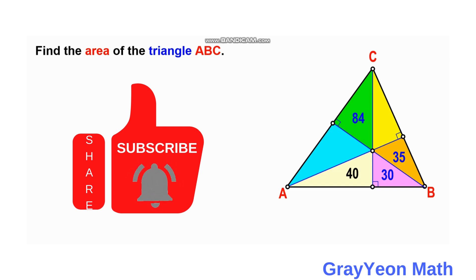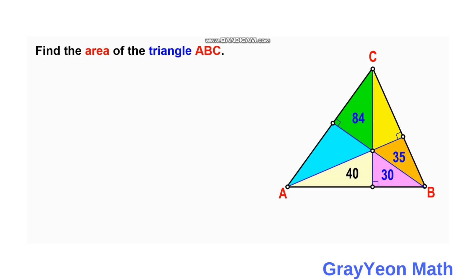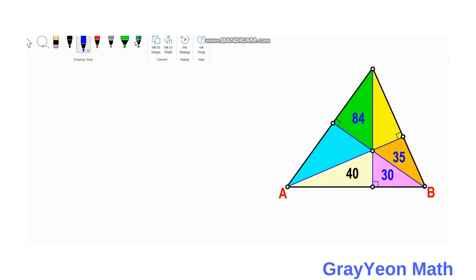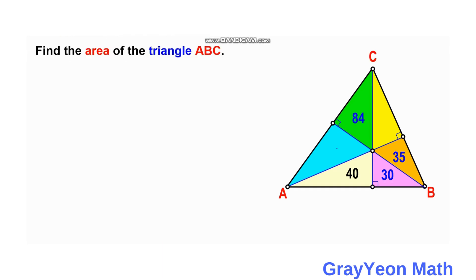We are required to find the area of triangle ABC. To find the total, we need to find the area of the two unknowns — the blue and the yellow. So let's call the blue as A and the yellow as B.